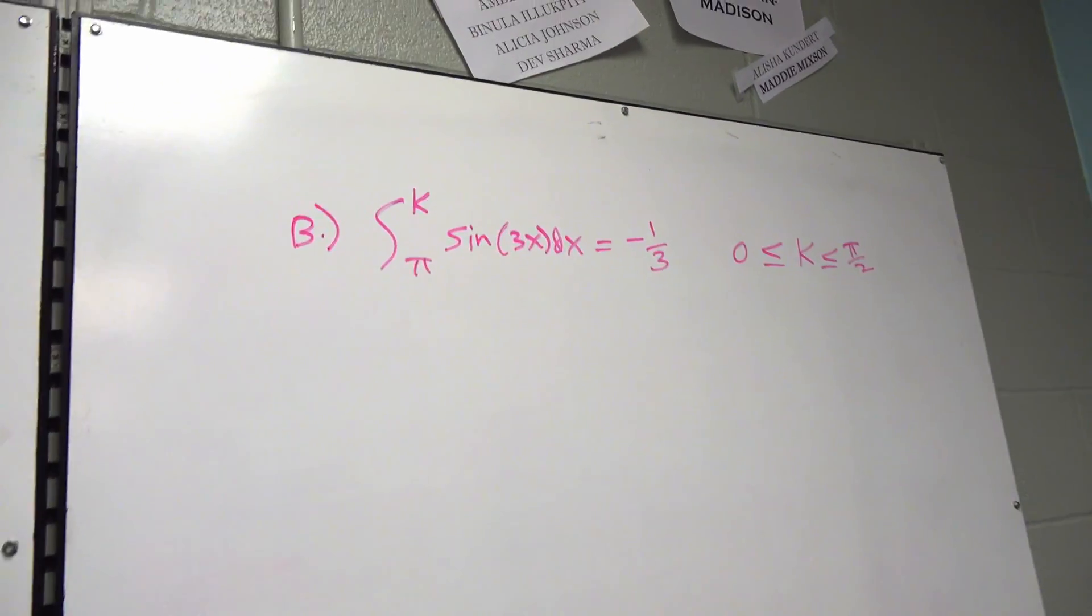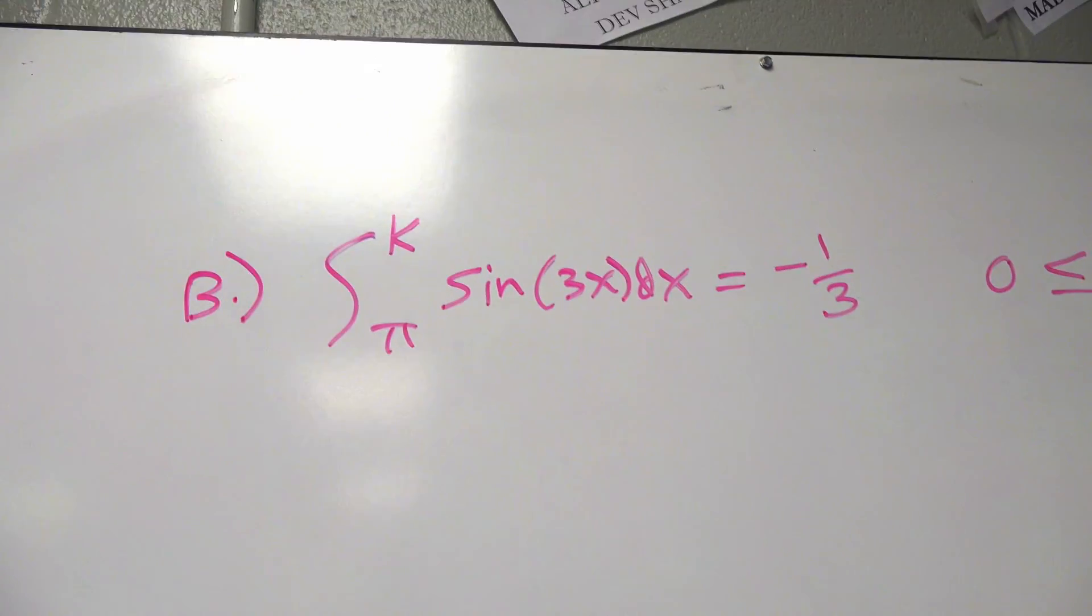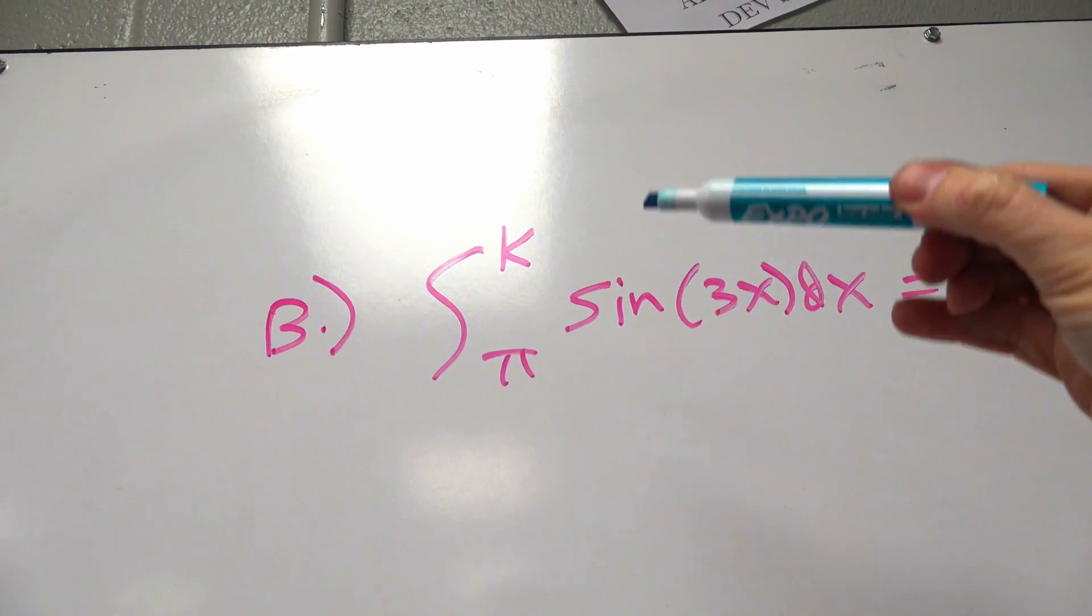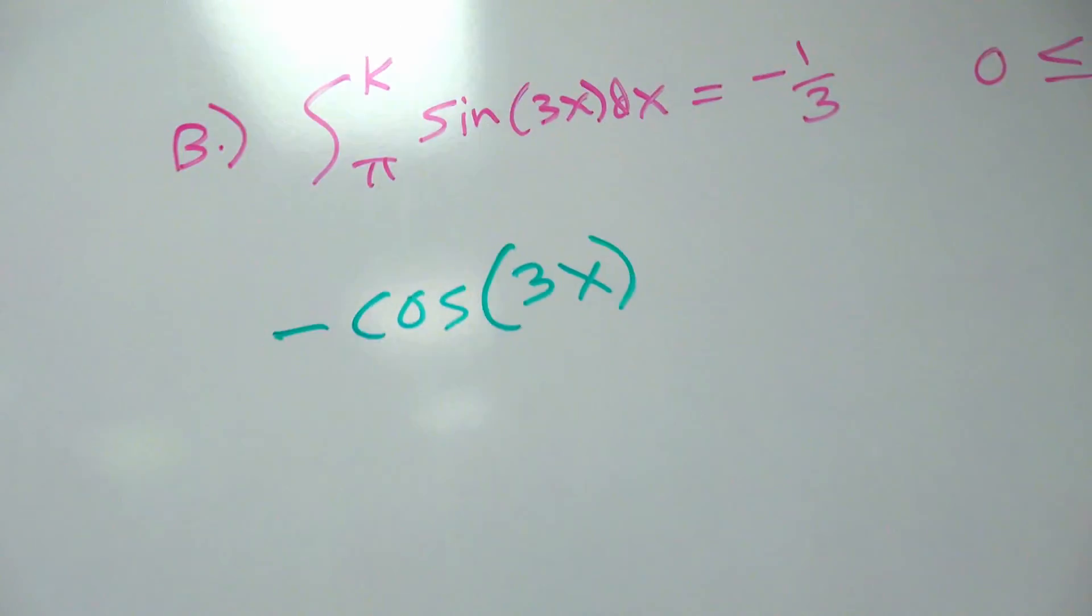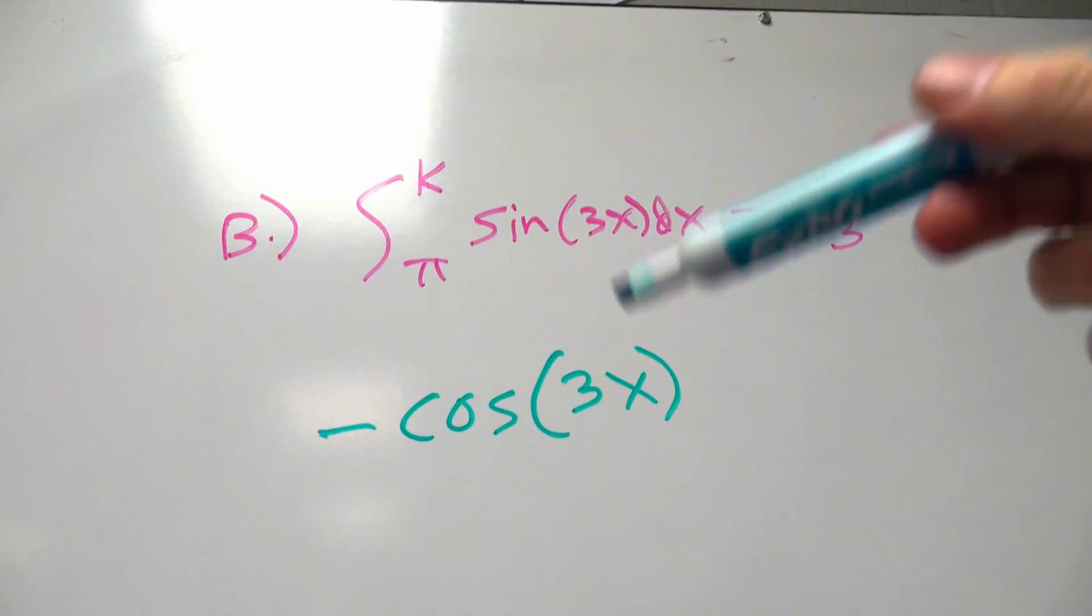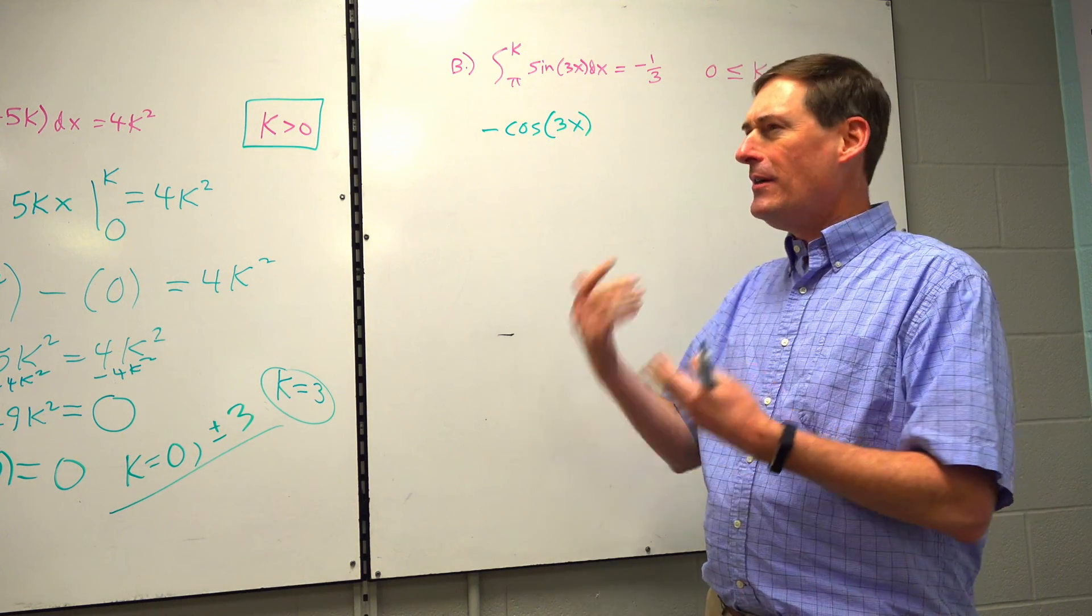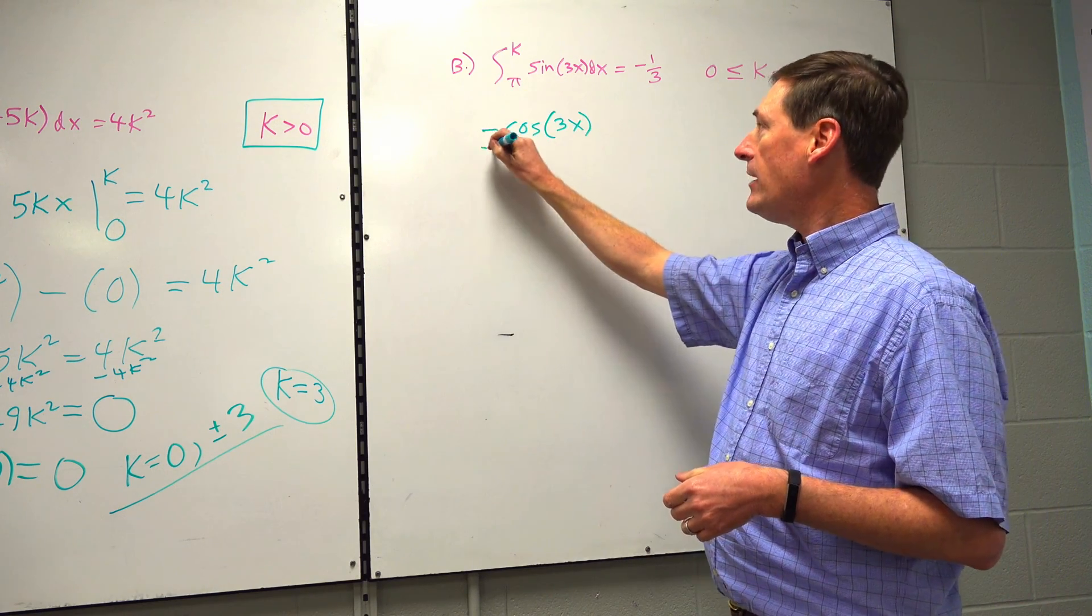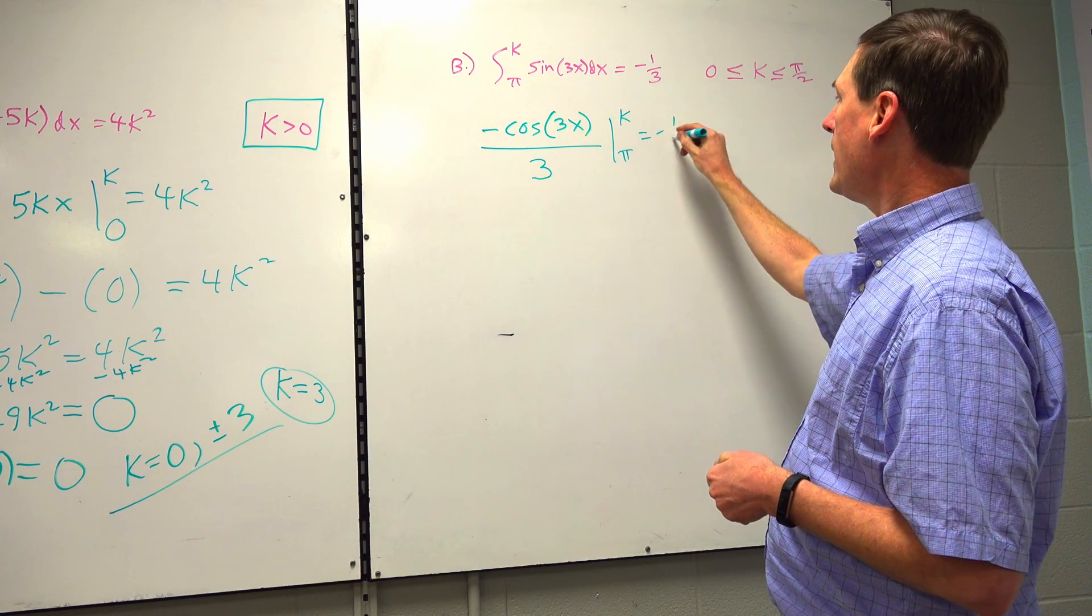Letter B. Another definite integral from pi to K of sine of 3x dx. And I'm going to give you what it equals. It equals negative one-third. So, the integration of sine - remember, the derivative of sine is cosine, so the integration of sine is negative cosine. That gets confused all the time because your brain is still on derivatives. The integration of sine is negative cosine of 3x. Every integration gets divided by the chain rule, which in this case would be 3. Evaluated from pi to K equals negative one-third.